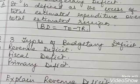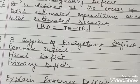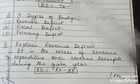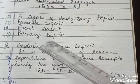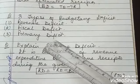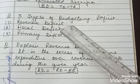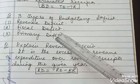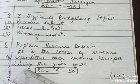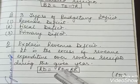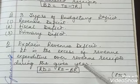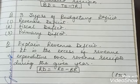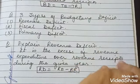Deficit is always an issue for any government. There are three different types of deficits in an economy: the first is a revenue deficit, the second is a fiscal deficit, and the third is a primary deficit. A revenue deficit is the excess of revenue expenditure over revenue receipts — it occurs when the government's revenue expenditure exceeds its revenue receipts.